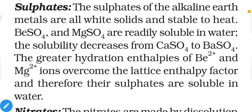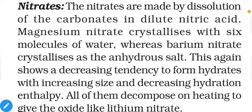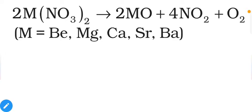Nitrates are made by dissolving carbonates in dilute nitric acid. Magnesium nitrate crystallizes with six molecules of water, whereas beryllium nitrate crystallizes as the anhydrous salt — anhydrous means without water or moisture, i.e., the dried form. This again shows the decreasing tendency to form hydrates with increasing size and decreasing hydration enthalpy. All of them decompose on heating to give oxides, similar to lithium nitrate: 2M(NO₃)₂ → 2MO + 4NO₂ + O₂.